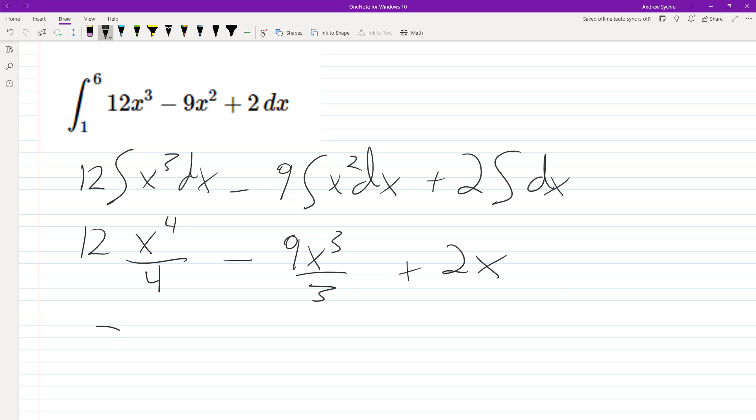Alright, so this becomes three x to the fourth minus three x cubed plus two x and we're going from one to six.